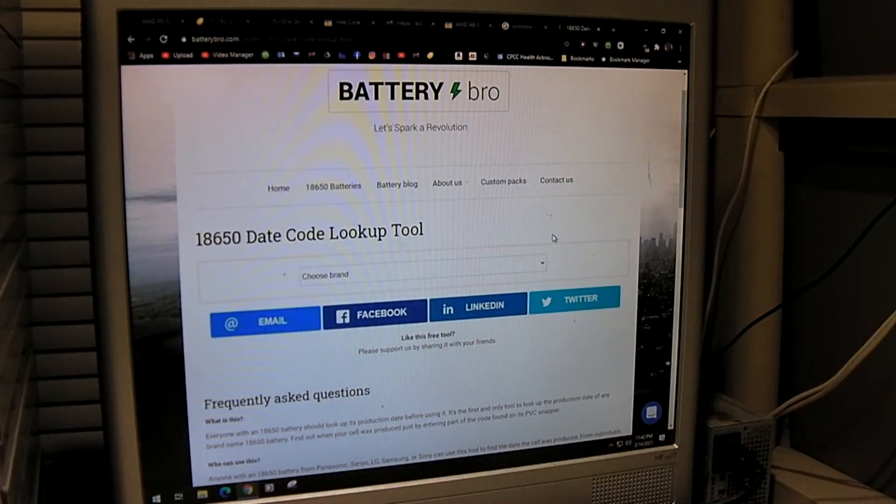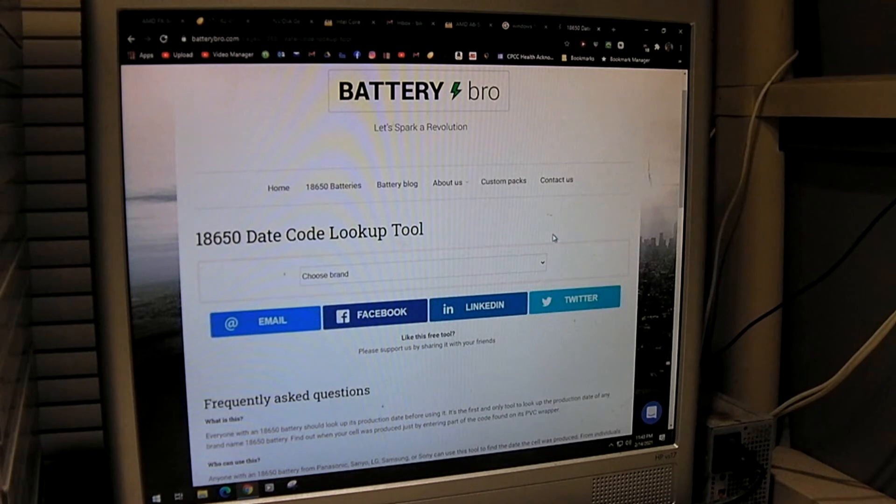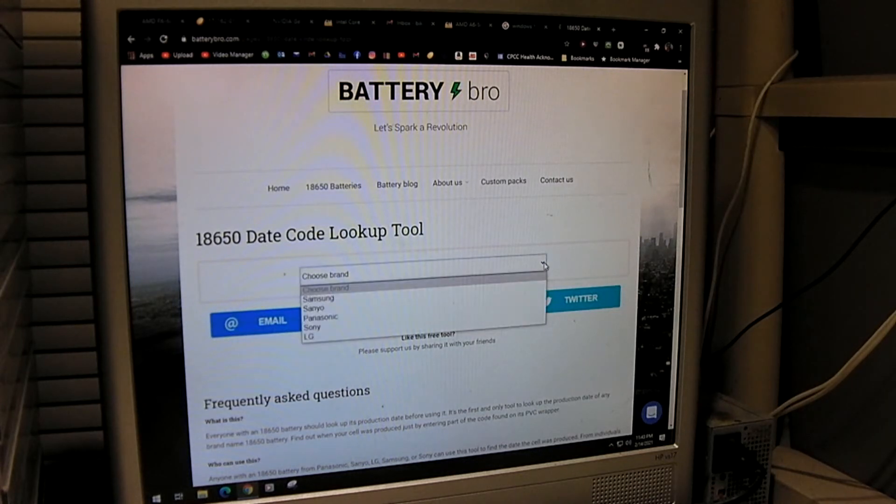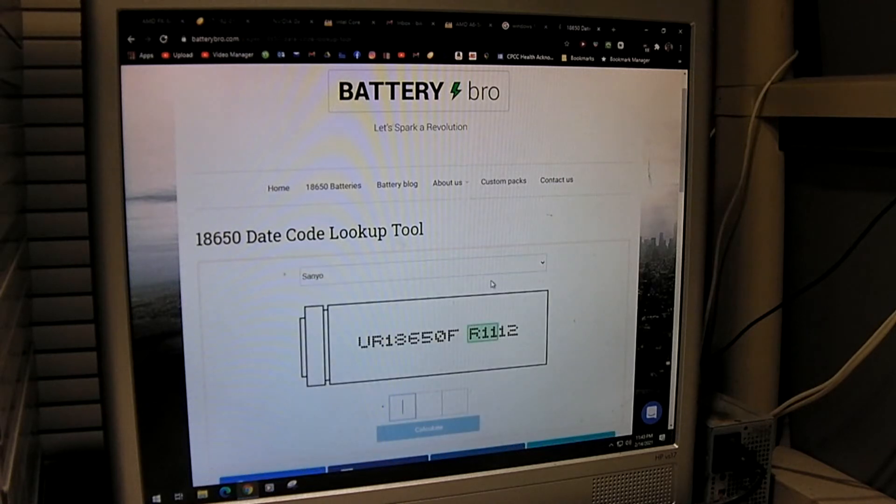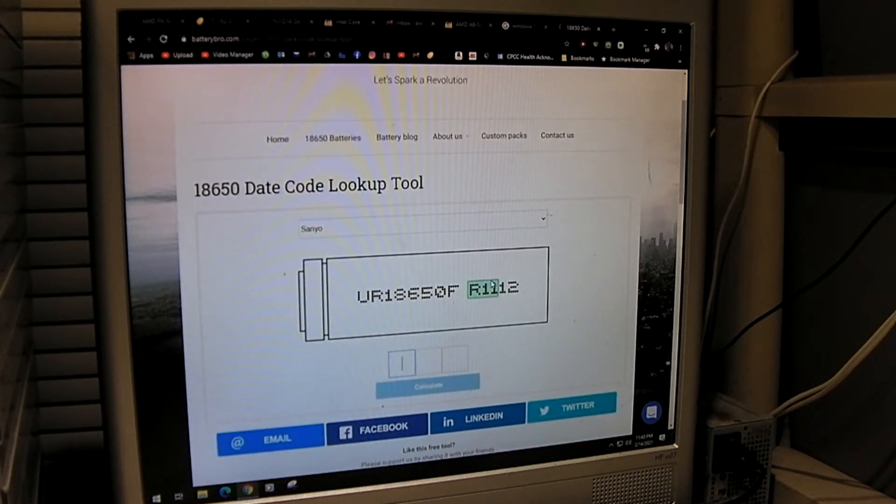So before I actually go any further with this, I've forgotten to mention, whenever you harvest cells like this, it's important to pull up the data sheets and look at the information about the cell. I did do that with the other cells I harvested, but I didn't actually show the data sheet or information right on the camera. But with these cells, the first thing I'm going to do is I don't know exactly when these were manufactured, so the first thing I'm going to do is look up the manufacturing dates.